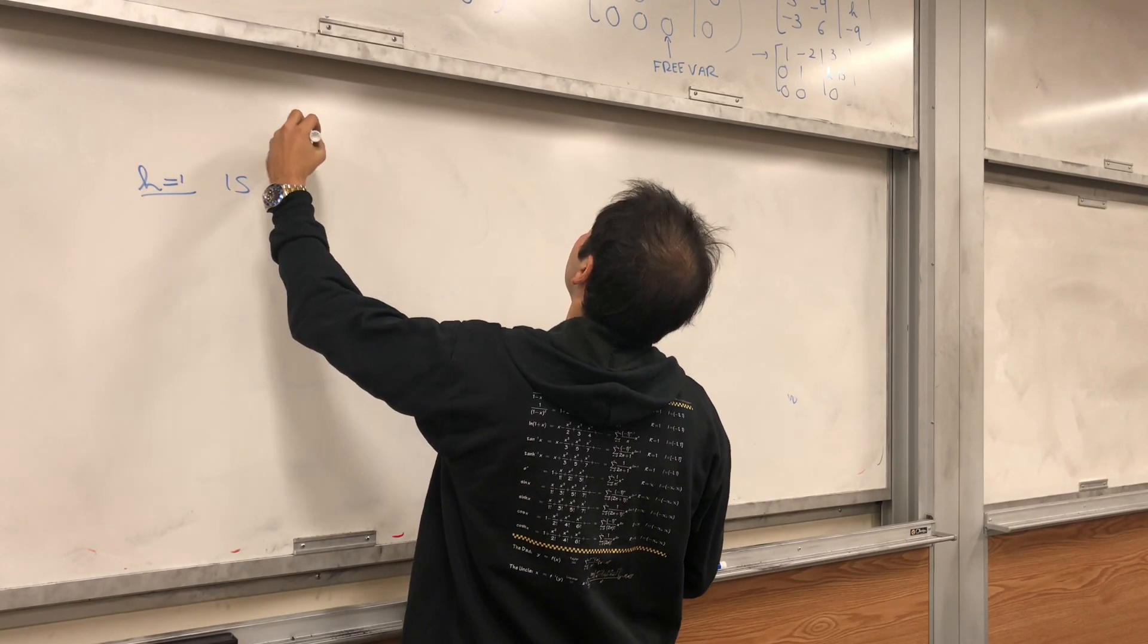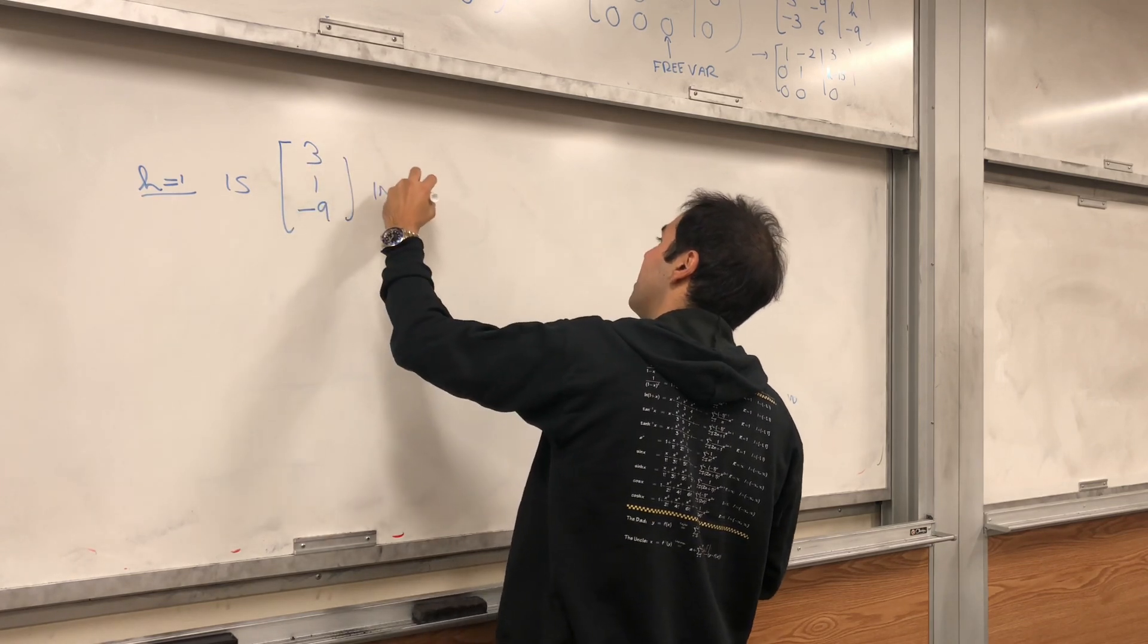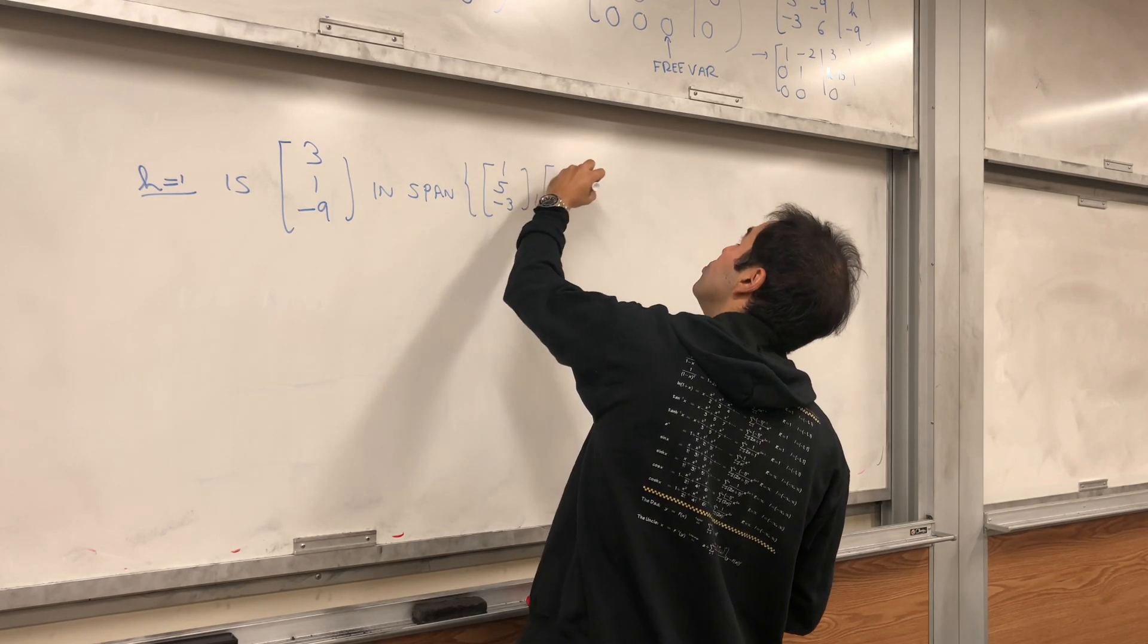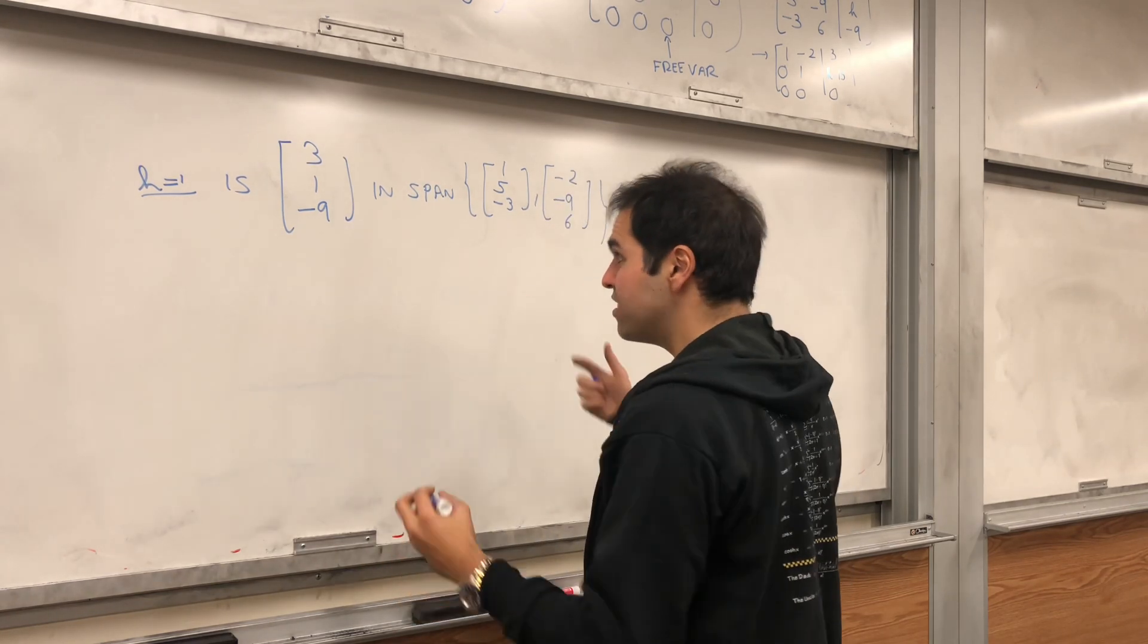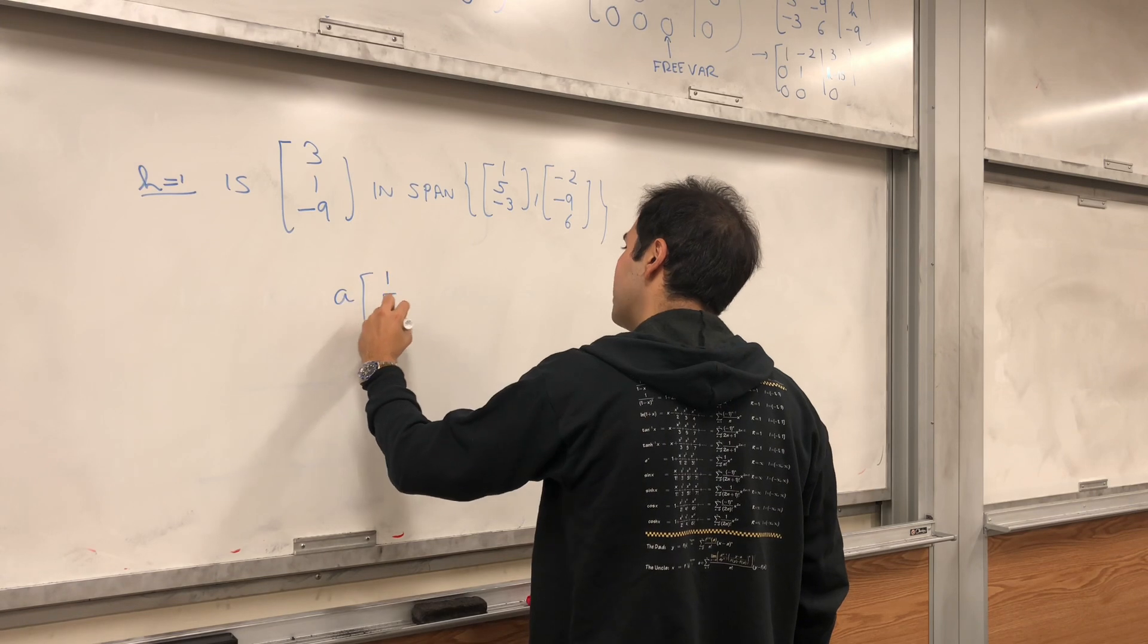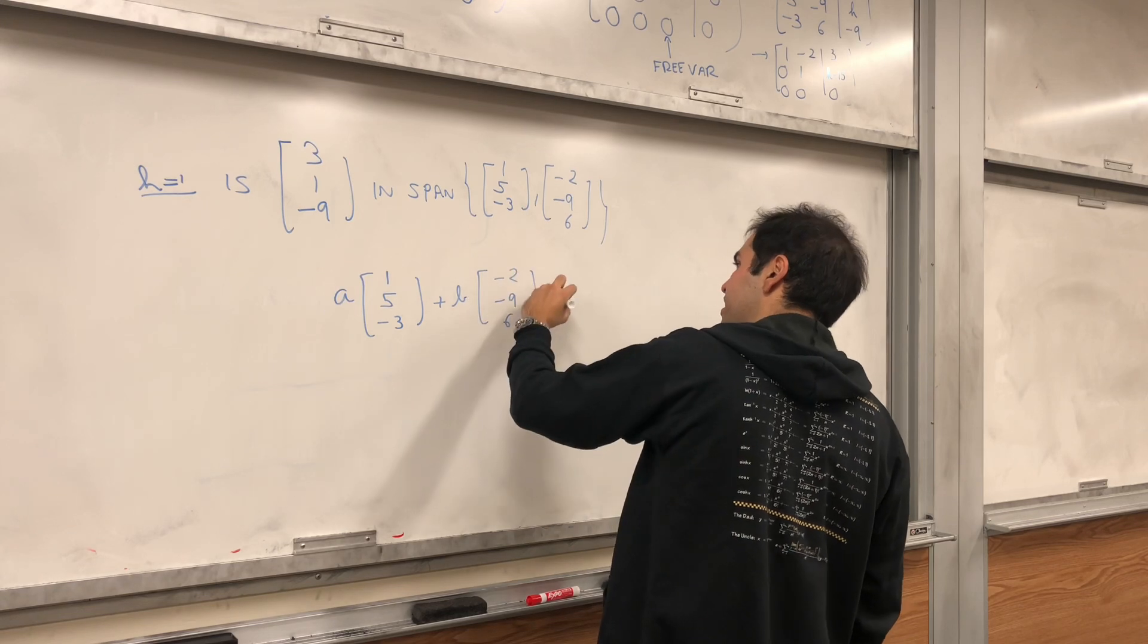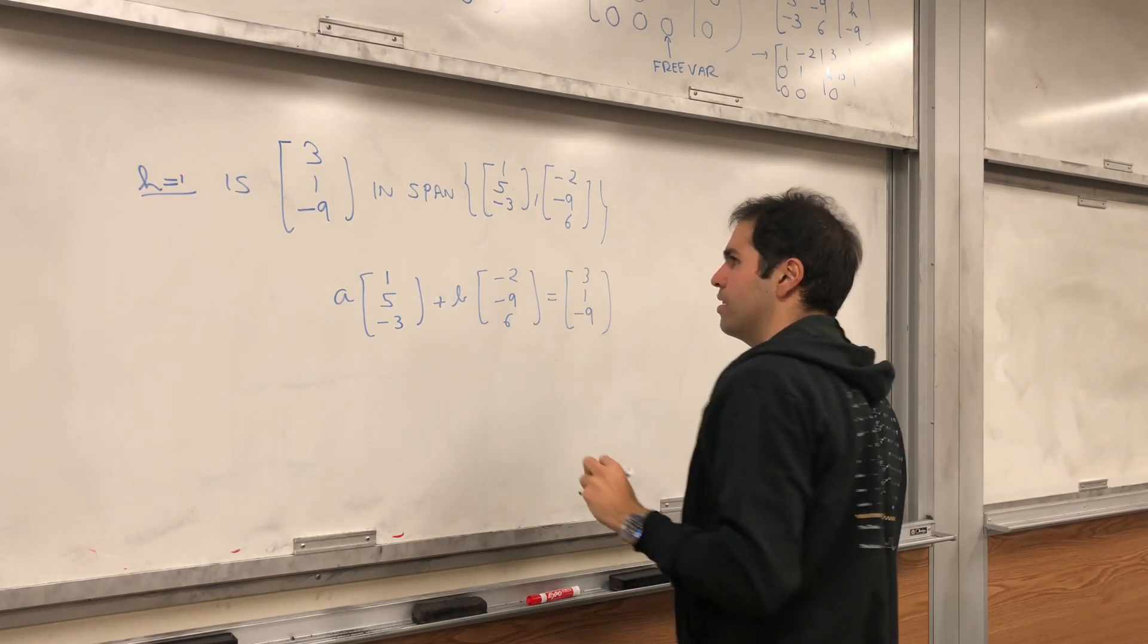Is the vector 3, 1, minus 9, in the span of the other two vectors: 1, 5, minus 3 and minus 2, minus 9, 6? In fact, let's try to find a and b such that a times 1, 5, minus 3 plus b times minus 2, minus 9, 6 equals 3, 1, minus 9.